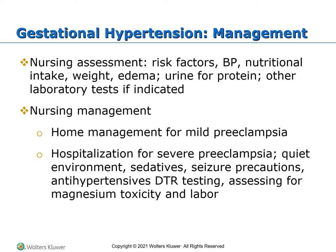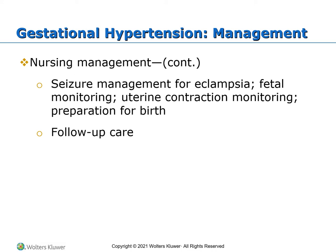Evaluate for signs of labor, fetal distress, and administer glucocorticoids to mature fetal lungs in preparation for the baby to be born early. Complications of gestational hypertension include DIC, hepatic failure, renal failure, cerebral hemorrhage or CVA, retinal detachment, intrauterine growth restriction, small for gestational age secondary to fetal hypoxia and malnutrition caused by maternal vasospasms and hypovolemia, and maternal and fetal death.